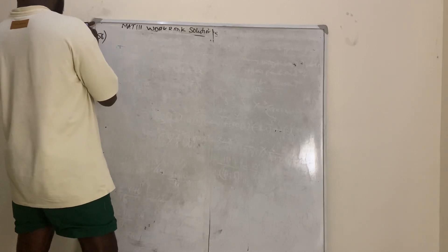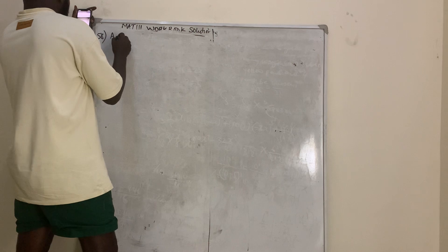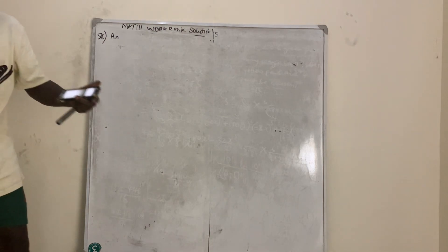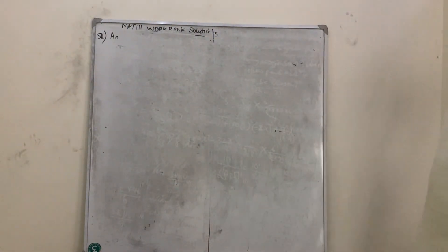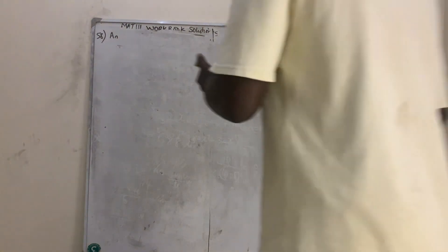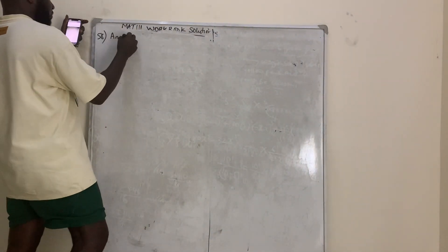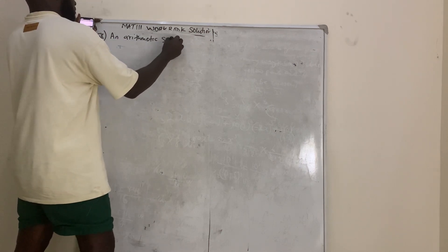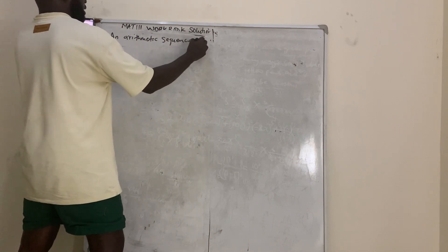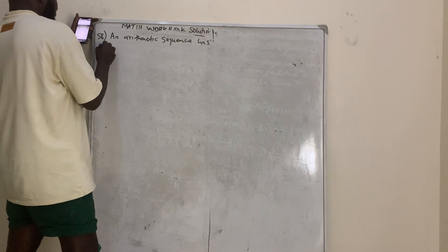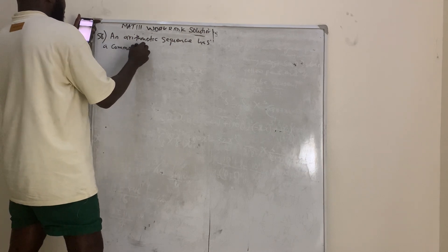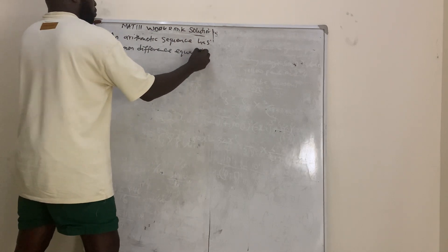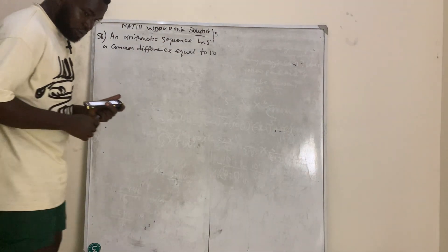An arithmetic sequence has a common difference equal to 10, and its sixth term is equal to 52.